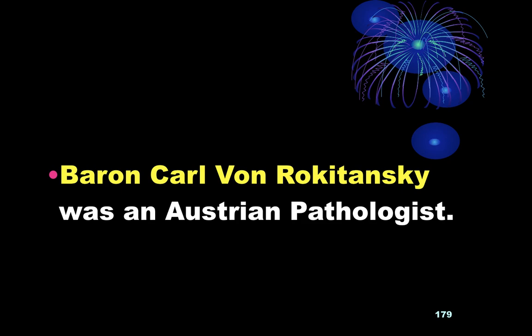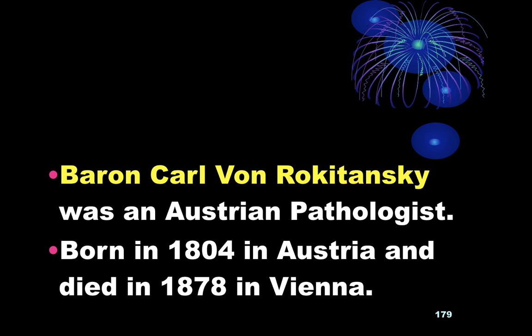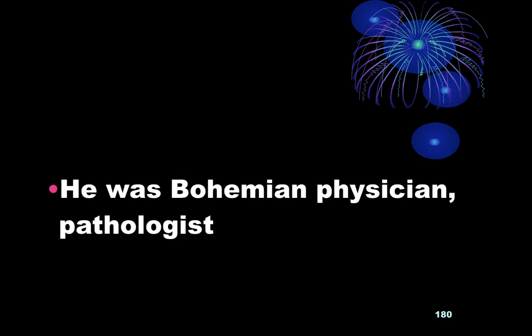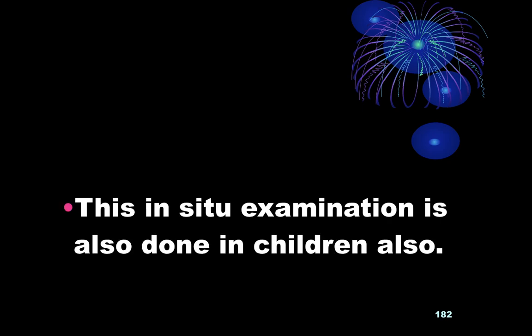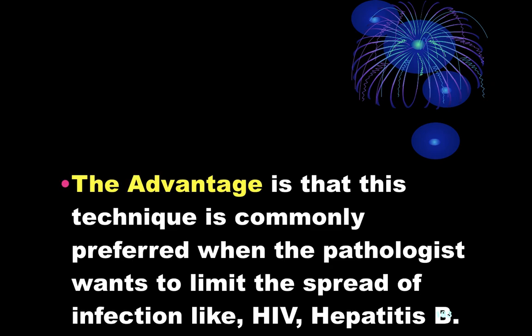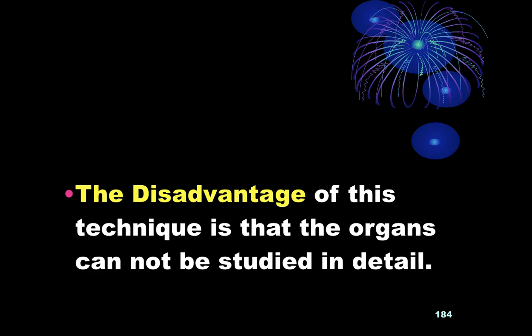Rokitansky's technique: Karl von Rokitansky was an Austrian pathologist, born in 1804 in Austria and died in 1878 in Vienna. He was a Bohemian physician-pathologist, and Rokitansky's method involves in-situ study of the organs. This in-situ examination is also done in children. The advantage is that it is preferred when the pathologist wants to limit the spread of infection like HIV and Hepatitis B, but the disadvantage is that organs cannot be studied in detail.